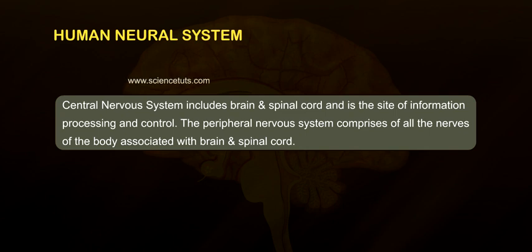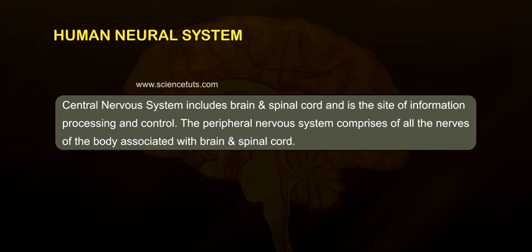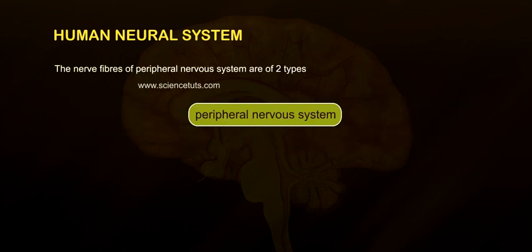The peripheral nervous system comprises all the nerves of the body associated with the brain and spinal cord. The nerve fibers of the peripheral nervous system are of two types.